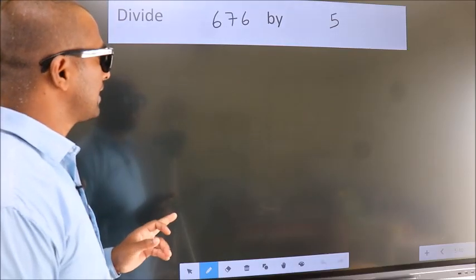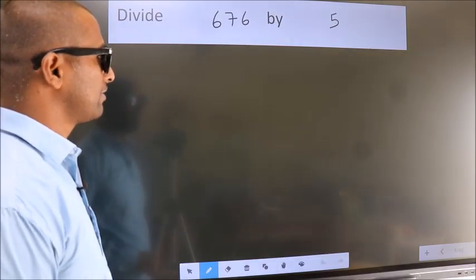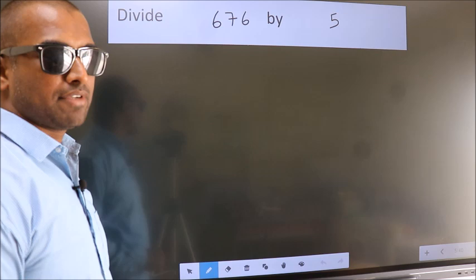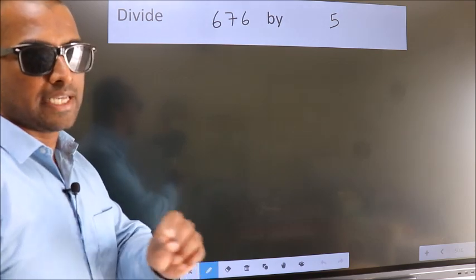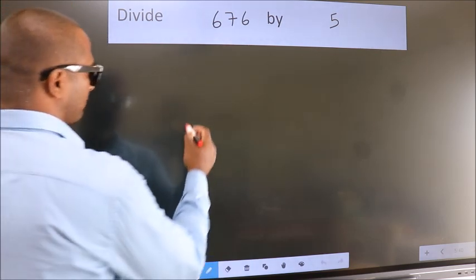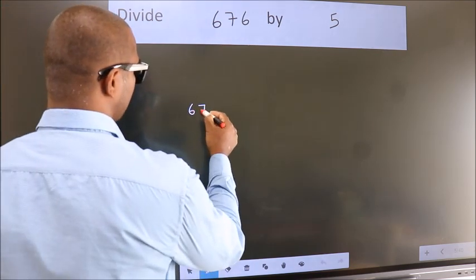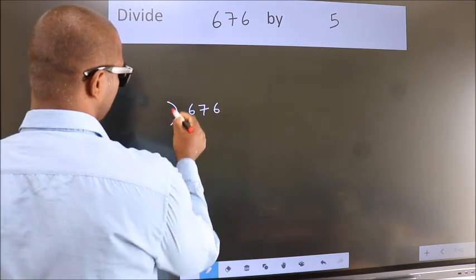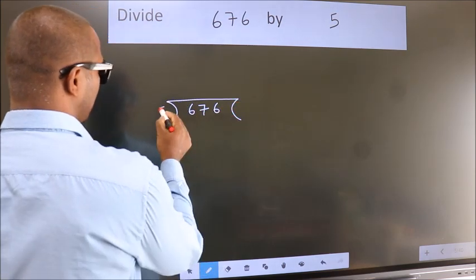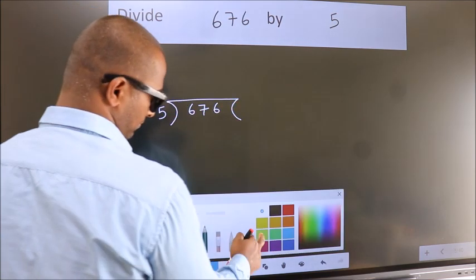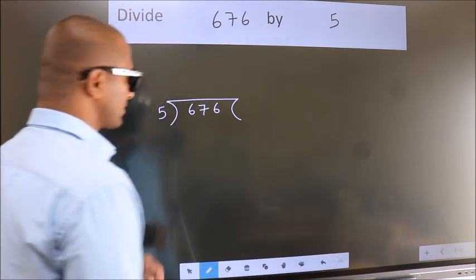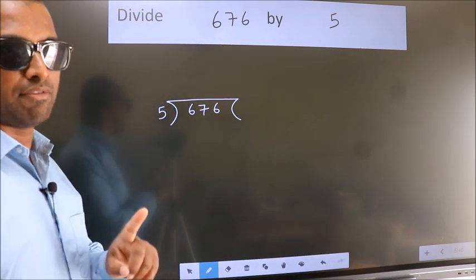Divide 676 by 5. To do this division, we should frame it in this way: 676 here, 5 here. This is your step 1.